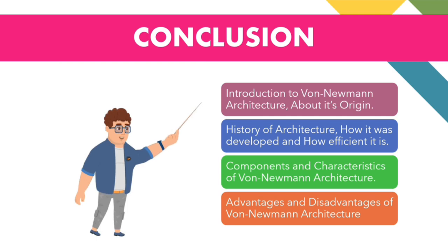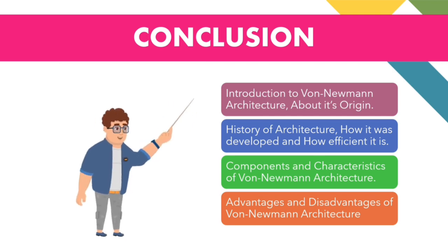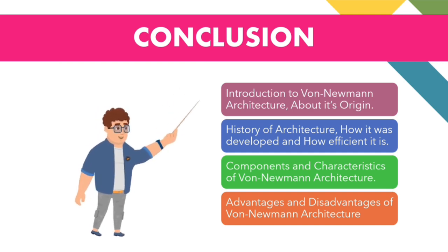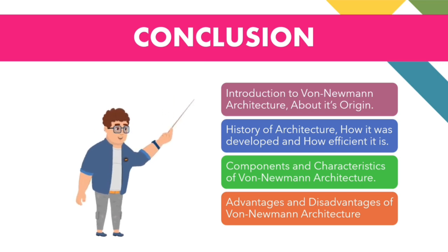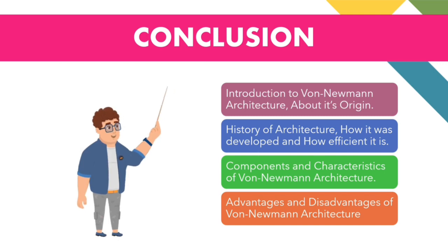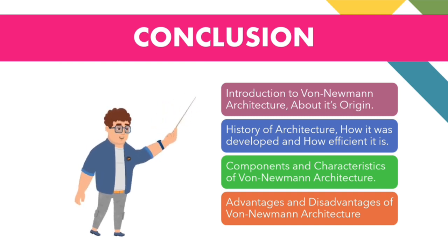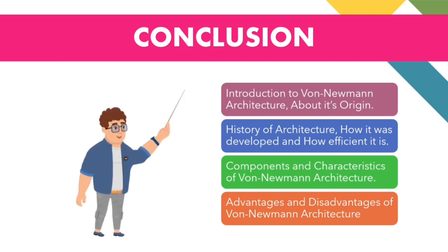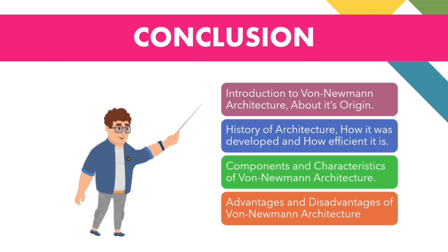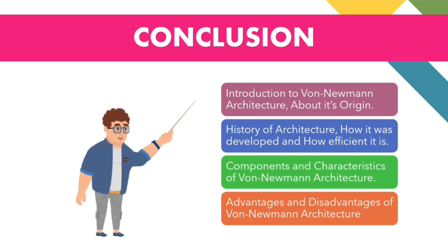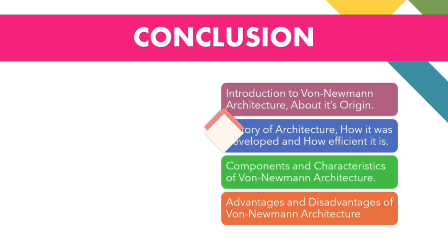We discussed the key characteristics of Von Neumann architecture, including its use of a common bus for data and instructions and the concept of the stored program, and how these characteristics influenced the design of modern computers. We also discussed the advantages such as flexibility and ease of programming, and the limitations including the Von Neumann bottleneck. Modern computers are based on the stored program concept introduced by John Von Neumann in 1945, where programs and data are stored in a separate memory unit and treated the same, making computers much easier to reprogram and faster.